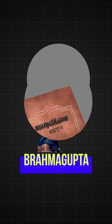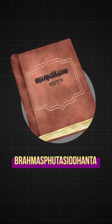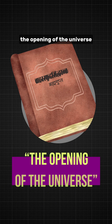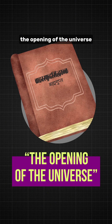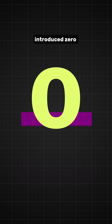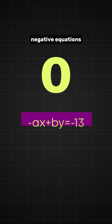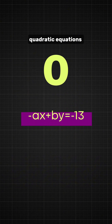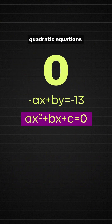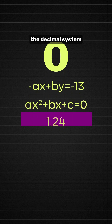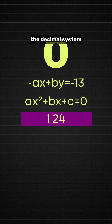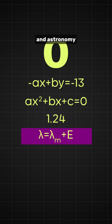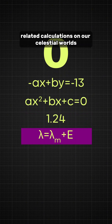His masterpiece, Brahma Sput Siddhanta, which translates to 'the opening of the universe,' introduced zero, negative equations, quadratic equations, the decimal system, and astronomy-related calculations on our celestial world.